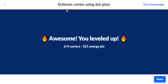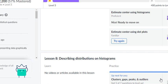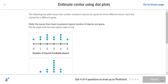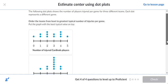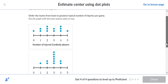Data Sets and Distribution. Estimate Center using Dot Plots. The following dot plot shows the number of players injured per game for three different teams. Each dot represents a different game. Order from least to typical.